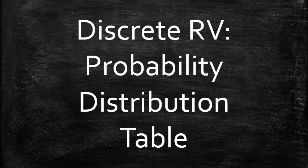We just learned that a discrete random variable can be described entirely by the probability distribution table, which is basically the list of all possible values of the variable along with their probabilities.